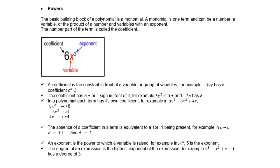Let's look at powers. A basic building block of a polynomial is a monomial. A monomial is one term and it can be a number, a variable, or the product of a number and a variable with an exponent. The number part of the term is called the coefficient, like 6 is a coefficient, x is a variable, and 3 is the exponent.